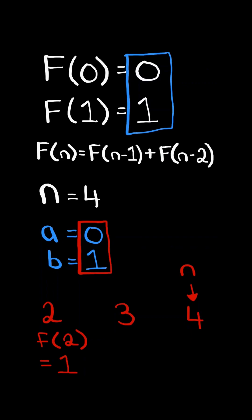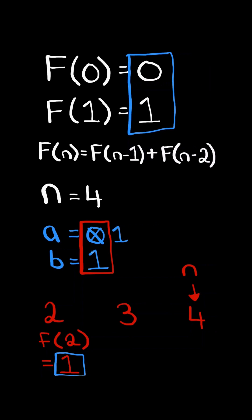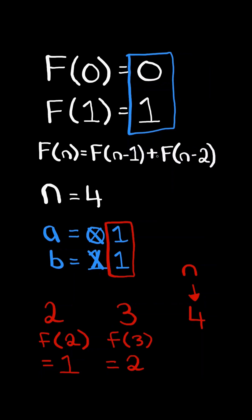We move these pointers forward by advancing a and setting it equal to b, and we advance b to the current number in the sequence. We continue to the next number in the sequence, which equals the sum of the previous two numbers. We advance these pointers forward by setting a equal to the value at b, and advancing b to the current number in the sequence.